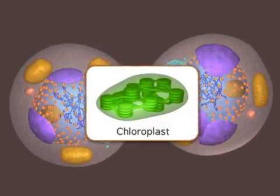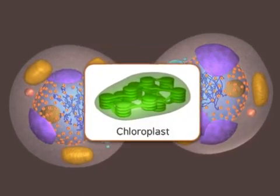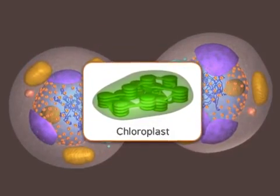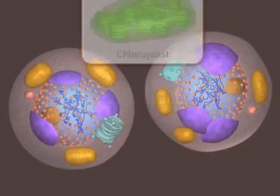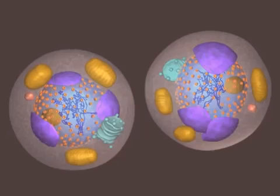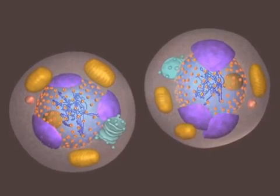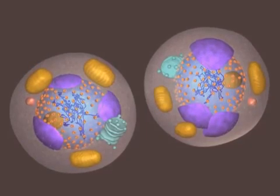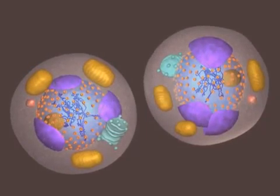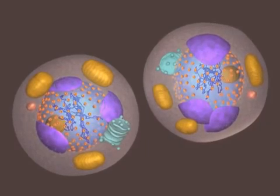Plant cells also have chloroplasts. Once split, the two new cells are now fully in the G1 stage of interphase and ready again to begin their growth.